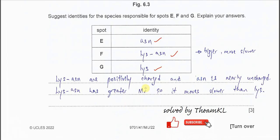The dipeptide and the lysine are positively charged, and the ASN is nearly uncharged, just slightly positive. The dipeptide is larger than the lysine, that's why it moves slower.